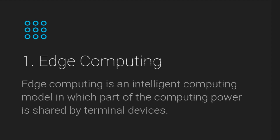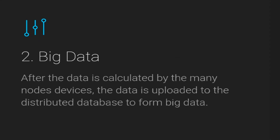The first feature of Hawk Network is edge computing. Edge computing is an intelligent computer model in which part of the computing power is shared by the terminal device. This is one of the core concepts of Hawk Network, which offers core computing technology to various assets within its network.